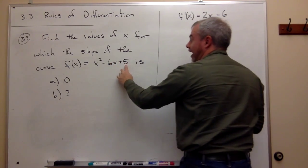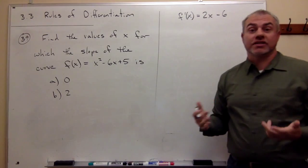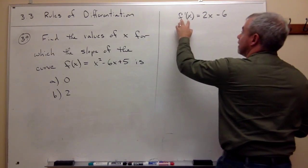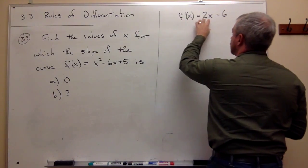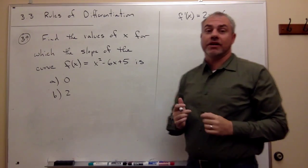The derivative of 5 is 0, because 5 is constant. So we just get that f'(x) is 2x - 6. That's my derivative.